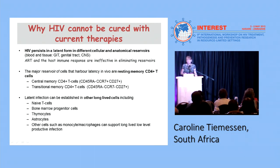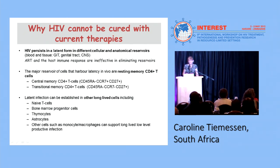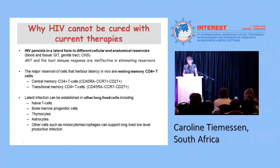The major reservoir cells harboring latency are resting memory CD4 T cells, either of the central memory type or the transitional memory type. Latent infection can also be established in other long-lived cells - naive cells, bone marrow progenitor cells, thymocytes, astrocytes, and other cells of the monocyte-macrophage lineage, which can support long-lived low-level productive infection.